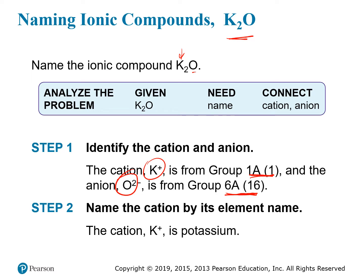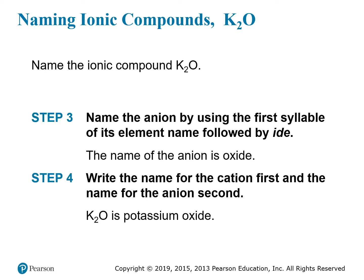Those are the ions involved. K+ is called potassium because the name of the ion is the same as the name of the metal. Oxygen, when it becomes an anion, has its ending changed to -ide, so oxygen becomes oxide. Putting them together, K2O is the compound known as potassium oxide — metal first, nonmetal second.